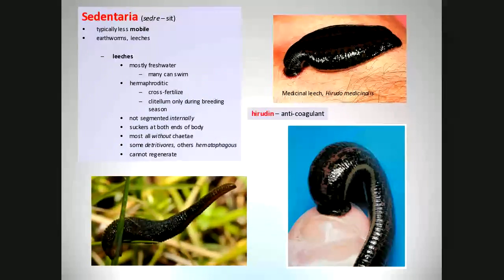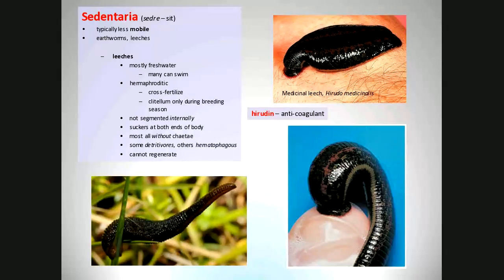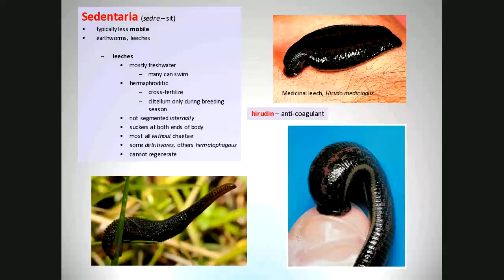Hermaphroditic means having both male and female organs. To prevent inbreeding and maintain genetic diversity, two hermaphrodites will typically swap sperm and egg with each other. The smooth area you see on earthworms is called the clitellum. In leeches, there's no smooth area; they only have the clitellum during breeding season. Leeches are segmented externally but not internally — being parasites, they simplify internal organs. They don't have chaetae since they're not concerned with mobility; instead, they use suckers to hold onto their host.